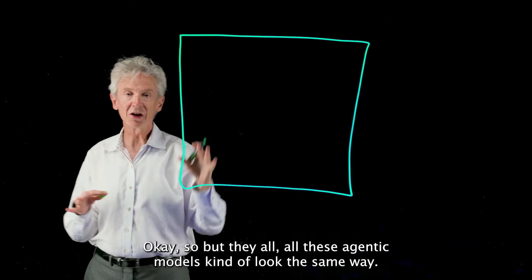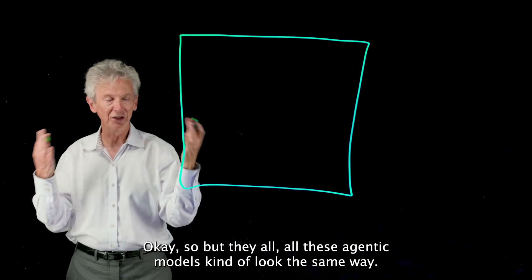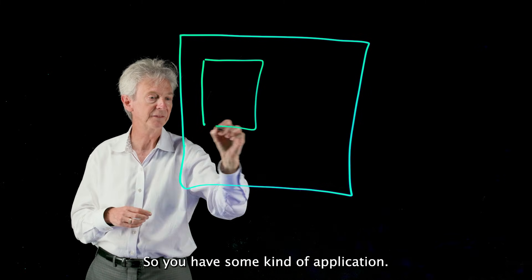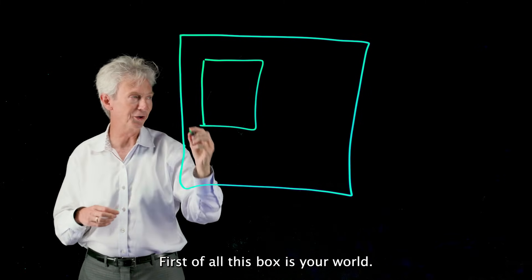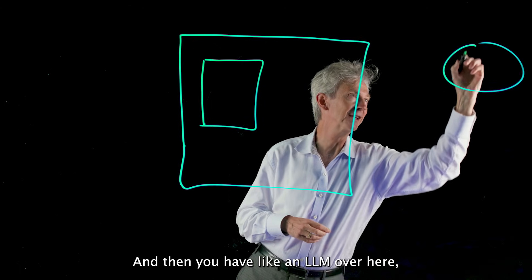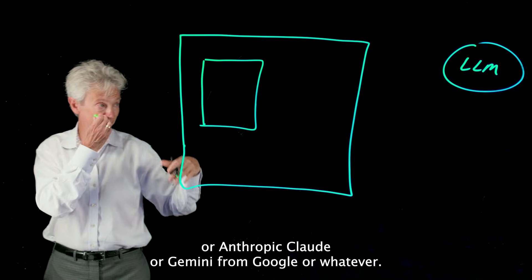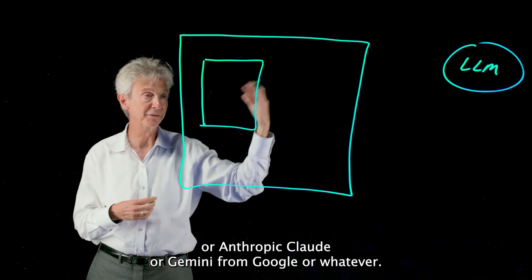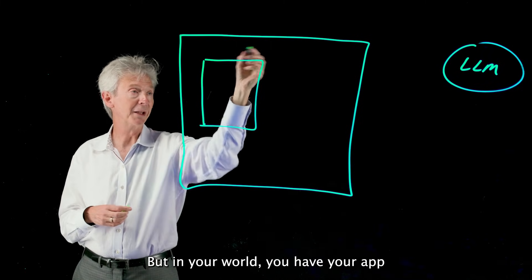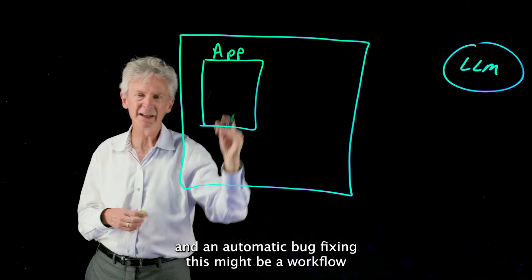Okay, so all these agentic models kind of look the same way. You have some kind of application—first of all, this box is your world—and then you have an LLM over here like OpenAI or Anthropic's Claude or Gemini from Google or whatever.